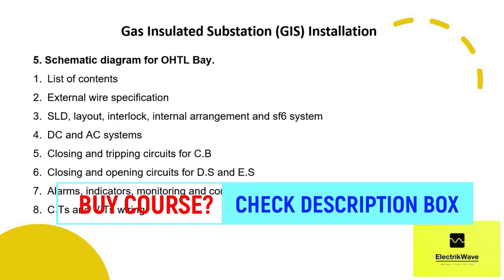We will see schematic diagram for OHTL bay, covering: list of contents, external wire specification, SLD, layout, interlock, internal arrangement and SF6 system, DC and AC systems, closing and tripping circuits for CB, closing and opening circuits for DS and ES, alarms, indicators, monitoring and control circuits, and CT and VT wiring.